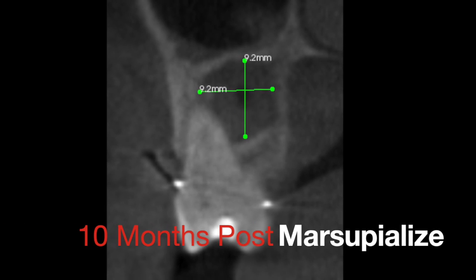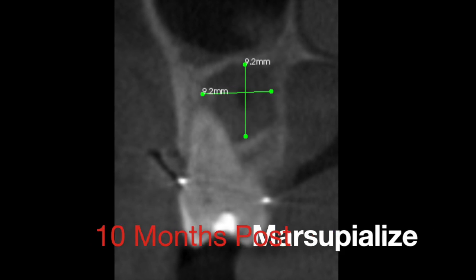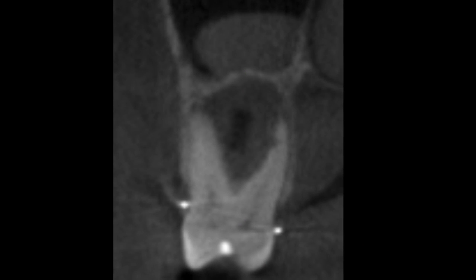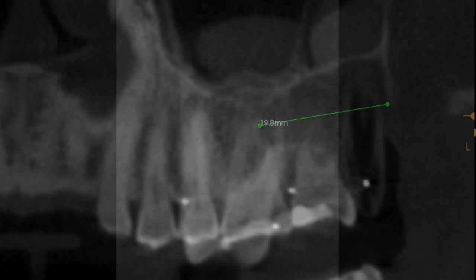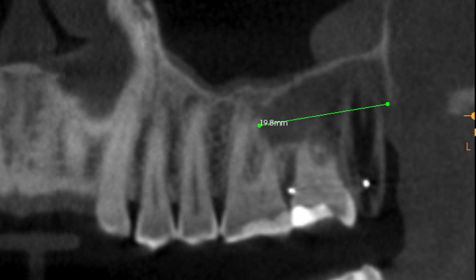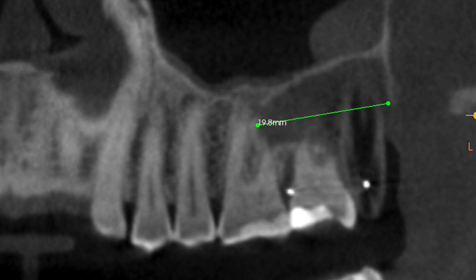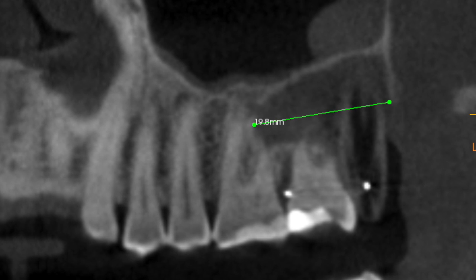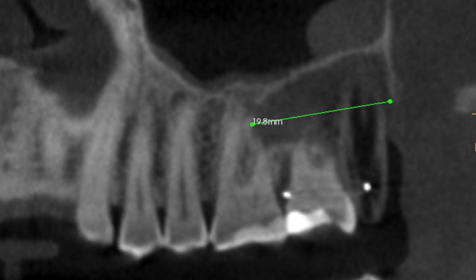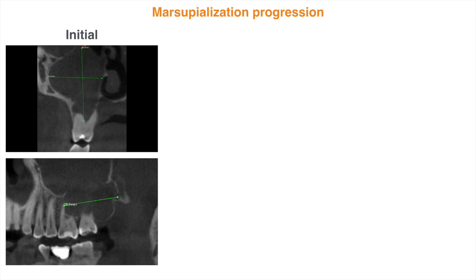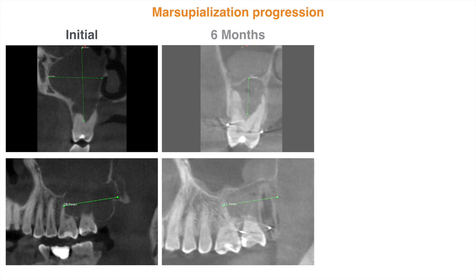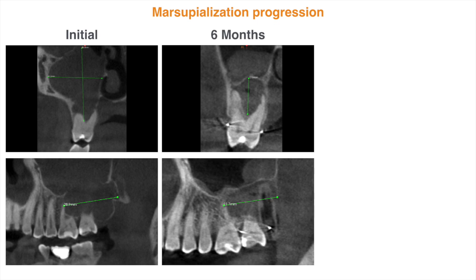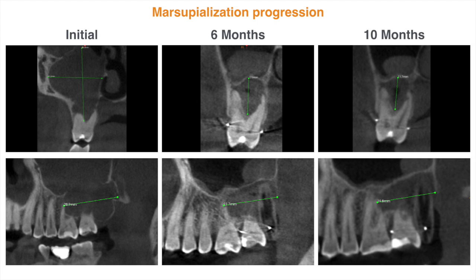Here's the patient at 10 months showing continued shrinkage of the cyst and a more defined surrounding bone. What's most significant is the remarkable reduction in vertical dimension of the original cyst, while we note a lesser degree of reduction in its anterior to posterior dimension. Comparing the cyst at initial presentation, at six months, and at 10 months, we can certainly appreciate the degree of cyst reduction in size.